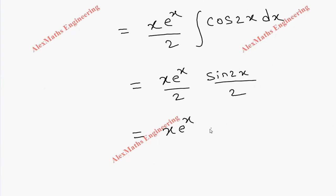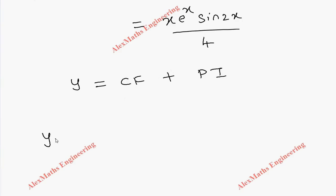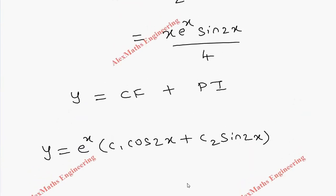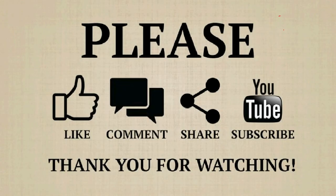So totally we get x·e^x·sin(2x) divided by 4. The complete solution is CF plus PI. The CF is e^x times (c1·cos(2x) plus c2·sin(2x)), and the PI is x·e^x·sin(2x) divided by 4.